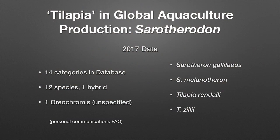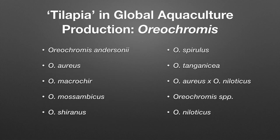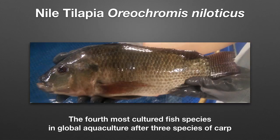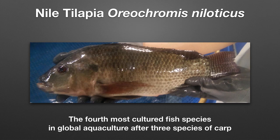Global tilapia aquaculture includes 12 species of commercial importance from these three genera, one hybrid, and a group of unidentified tilapia species. Two species come from Sarotherodon, two from Tilapia, and the remaining species of commercial importance are in the Oreochromis genus. The Nile tilapia, Oreochromis niloticus, is the fourth most cultured fish species in global aquaculture after three carp species, making it of major importance in world aquaculture.